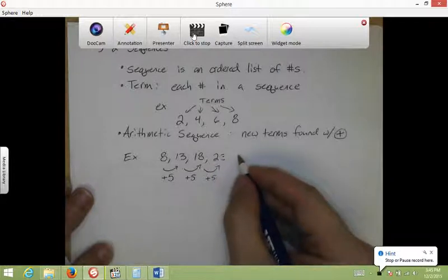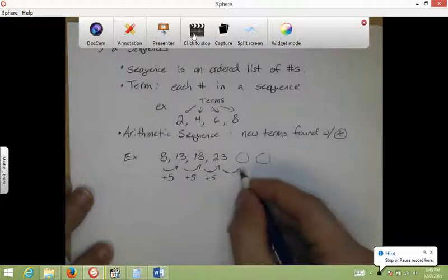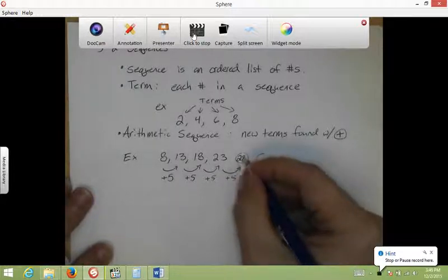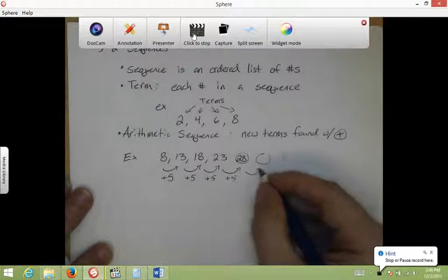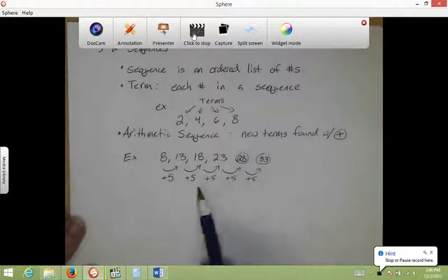So let's say I want to know the next two terms. From here to here, again, I'm going to add 5. 23 plus 5 is 28. And from here to here, adding 5 and 28 plus 5 is 33. So that's how I find the next two terms in an arithmetic sequence.